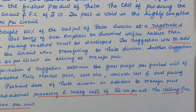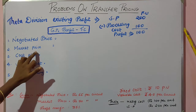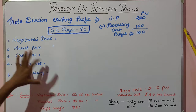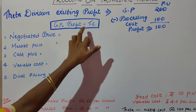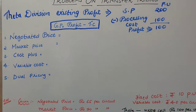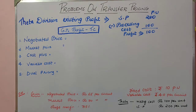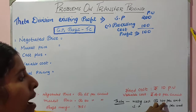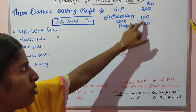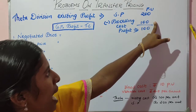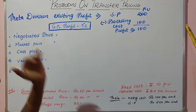Now we will start with the solution. The formula is: profit minus transfer cost gives gross profit. We need to find the existing profit of the company. The selling price of Theta is 200, and the additional processing and marketing cost is 100 per unit. So sales (200) minus cost (100) gives a profit of 100 per unit. Using this profit, we find gross profit under each transfer pricing method.